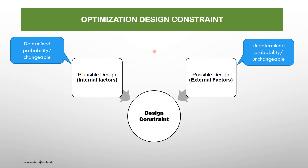Optimization design constants. The optimization design has two constants: one is the plausible design internal factor and the other is the possible design external factor. The plausible design internal factors are changeable, while the external factors cannot be changed — these are probability unchangeable.